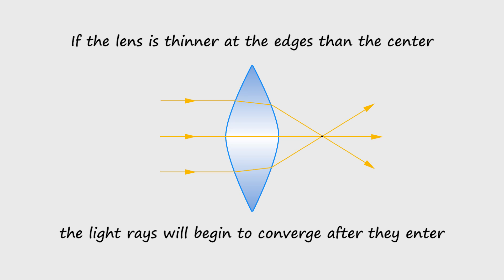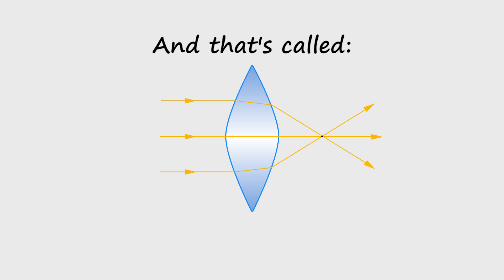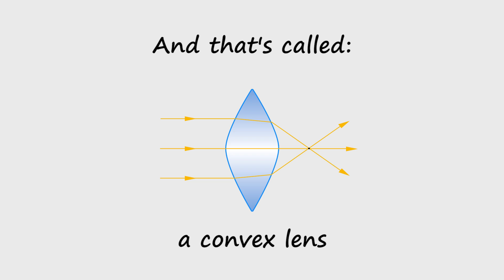If the lens is thinner at the edges than the center, the light rays will begin to converge after they enter. That's called a convex lens.